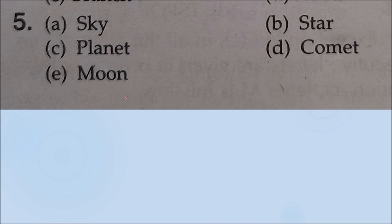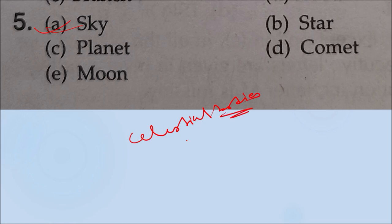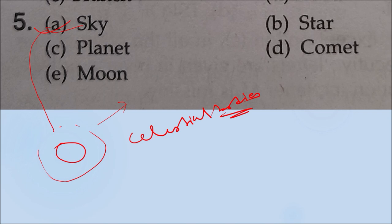Question number five: sky, star, planet, comet, and moon. The answer will be sky. Star, planet, comet, and moon are all celestial bodies — anything outside the Earth's atmosphere is a celestial body. Sky is part of the Earth and is not a physical object in the same sense as the others. So the answer is sky.